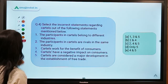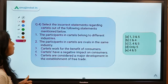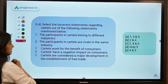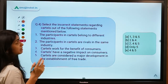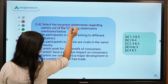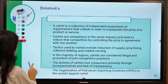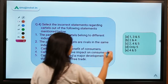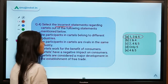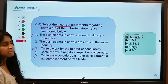Here is question four: select the incorrect statements regarding cartels from the following five statements. The answer is option A — meaning statements one, three, and five are incorrect. Let's learn about cartels.